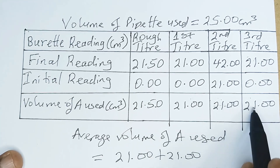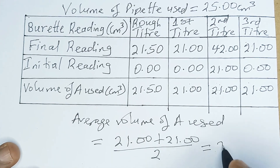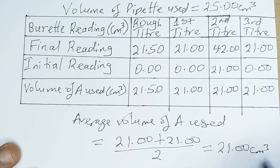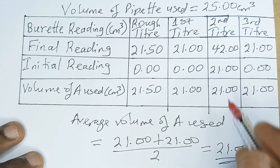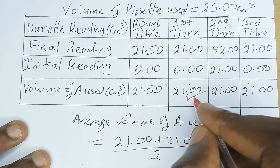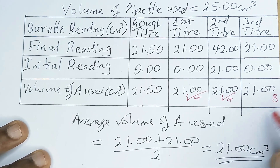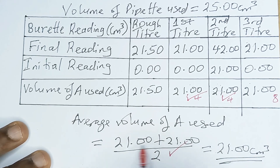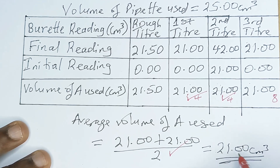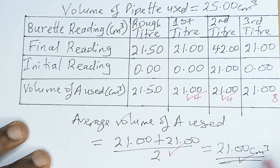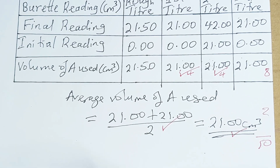We have to say average volume of A used is equal to 21.00 plus 21.00 divided by 2, giving us 21.00 cm³. When we are marking: if your first titre is correct we mark it and give 4 marks, when the second is correct we mark it and give 4 marks — making 8 marks already. The averaging gives 1 mark if they are concordant, meaning they should not differ by more than ±0.2. So 8 plus 2 gives 10 marks total. Let's go to the next question.